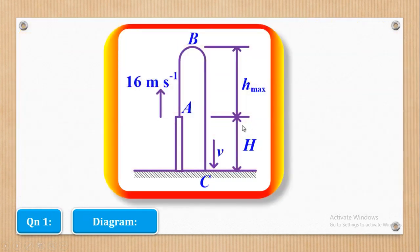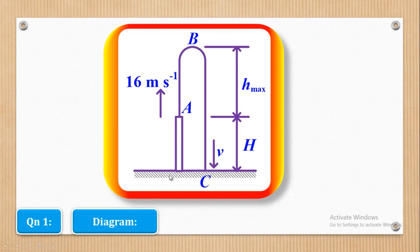The best thing to do is to first make a sketch. They told us the stone is thrown upwards from a point which is H meters above the ground with a velocity of 16 meters per second — this is the initial velocity. It moves upwards to a point B where it is momentarily at rest, reaching maximum height H max, and after that goes downwards to the ground at point C, hitting it with velocity V.